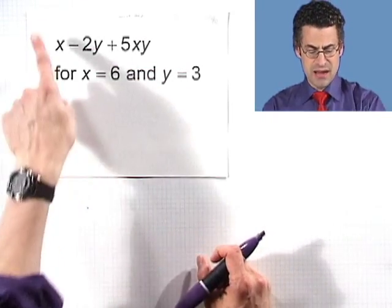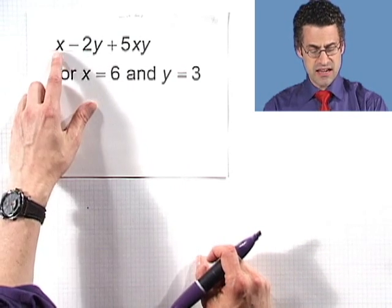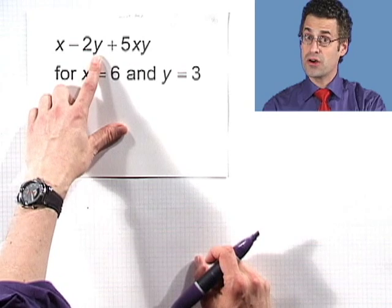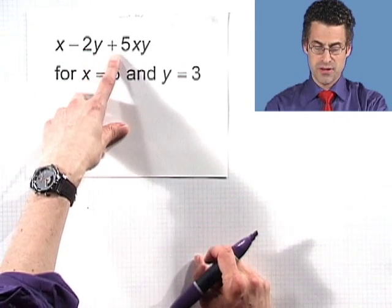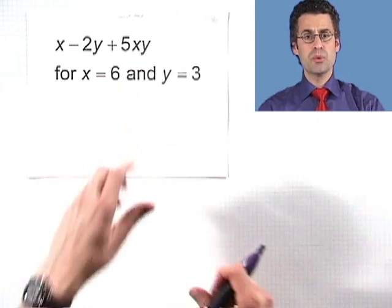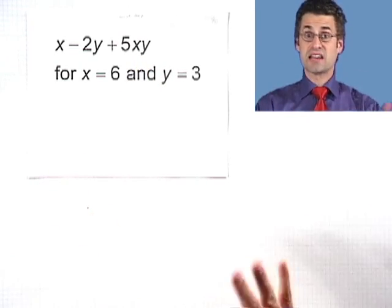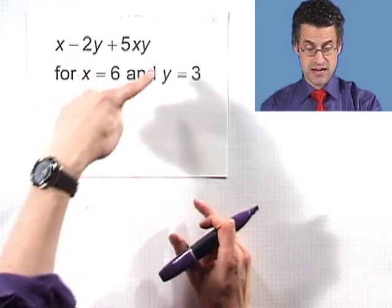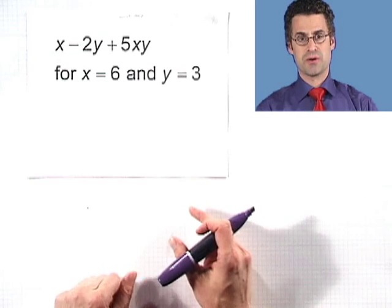So let me remind you what this means. This is a mathematical expression that says you take some unknown x and subtract off two times some other unknown y plus five times the product of x times y. So here we have two different unknowns x and y, and they could be any two numbers at all, and they're put together in this particular mathematical way to form that expression.